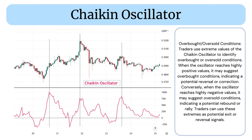Overbought/Oversold Conditions: Traders use extreme values of the Chaikin Oscillator to identify overbought or oversold conditions. When the oscillator reaches highly positive values, it may suggest overbought conditions, indicating a potential reversal or correction. Conversely, when the oscillator reaches highly negative values, it may suggest oversold conditions, indicating a potential rebound or rally. Traders can use these extremes as potential exit or reversal signals.